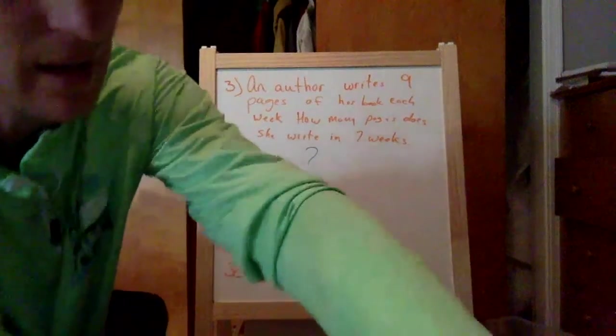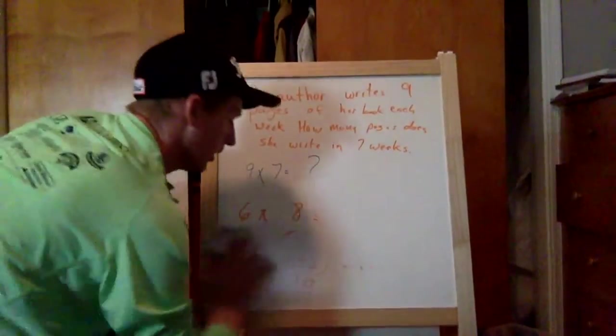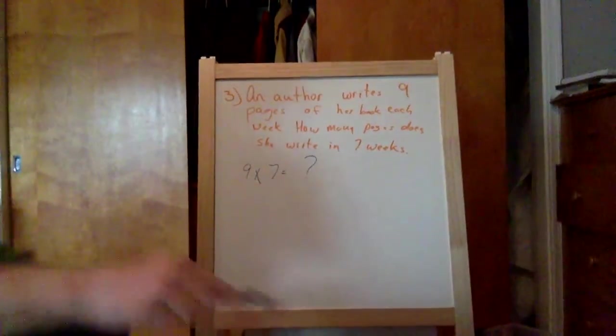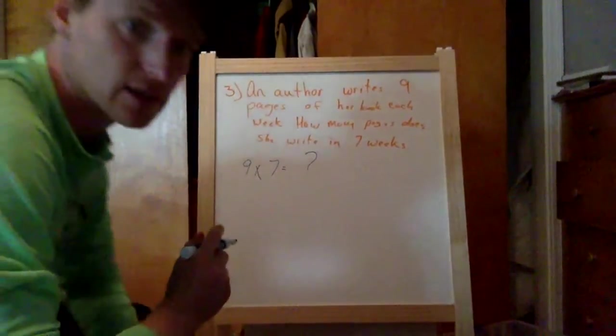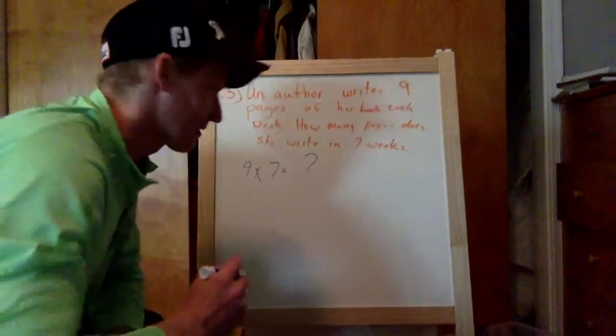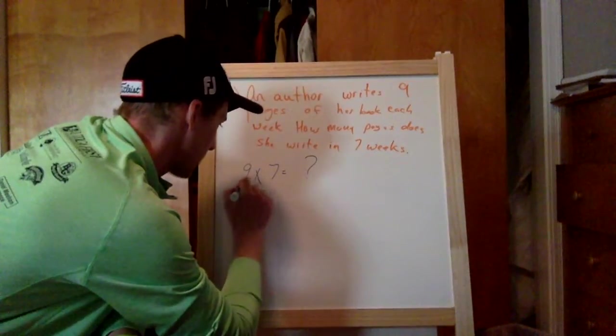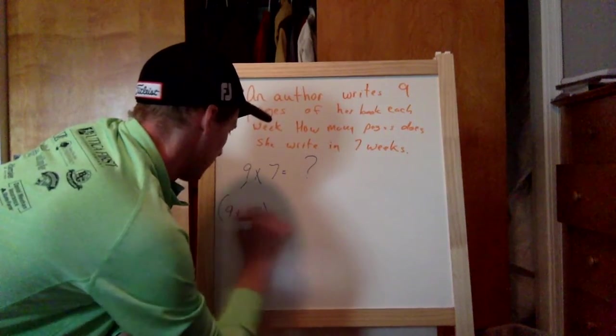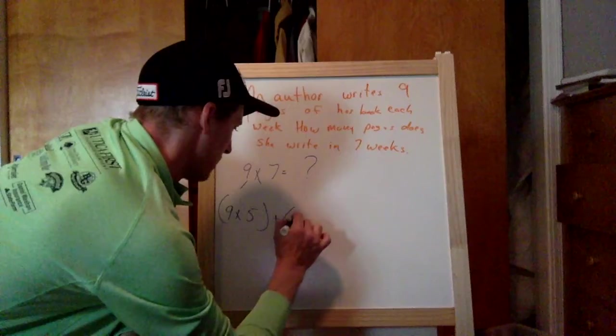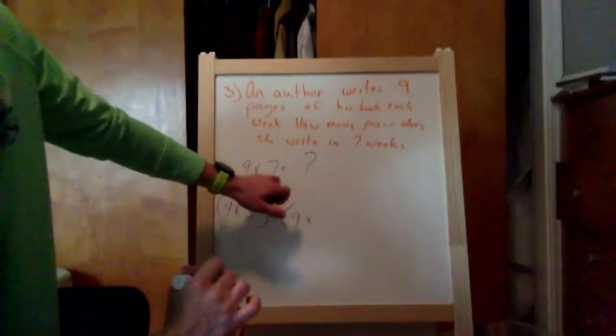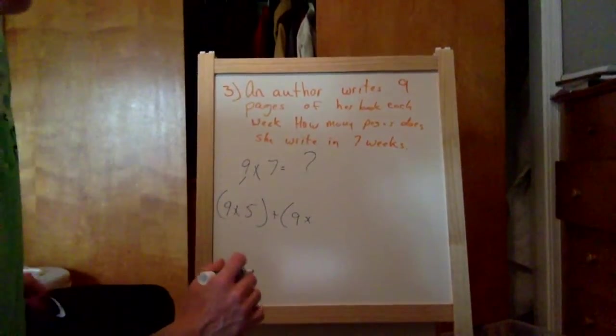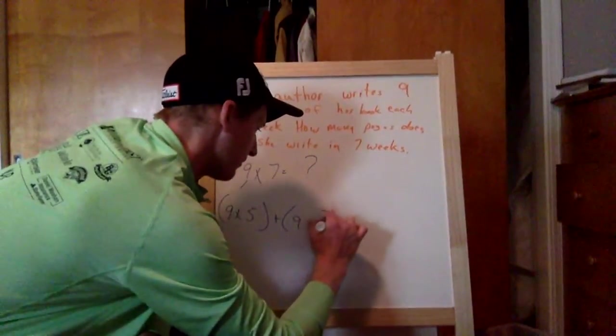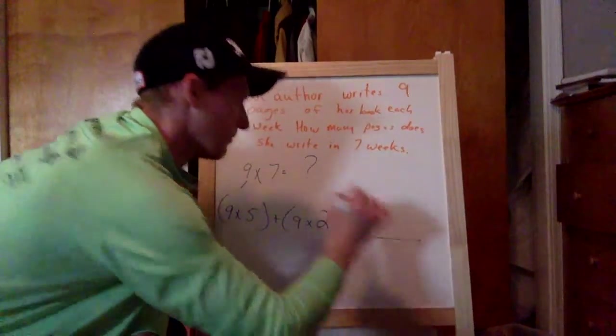So now let's go back to what the problem will look like. Nine times seven. So we need to break this up into a fives fact. So we will do, we're going to stick with the nine. Nine times five plus, keep the nine times, and now what is seven take away five? Two.